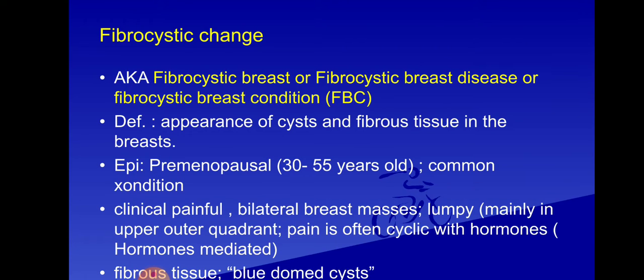The next important category is fibrocystic changes — previously also called fibrocystic disease, fibrocystic breast disease, or fibrocystic breast condition (FBC). The term commonly used now is fibrocystic breast condition or fibrocystic changes. This is defined as the appearance of cysts and fibrous tissue in the breast — multiple cystic areas along with excessive fibrosis. It mainly affects the premenopausal age group, 30 to 55 years.